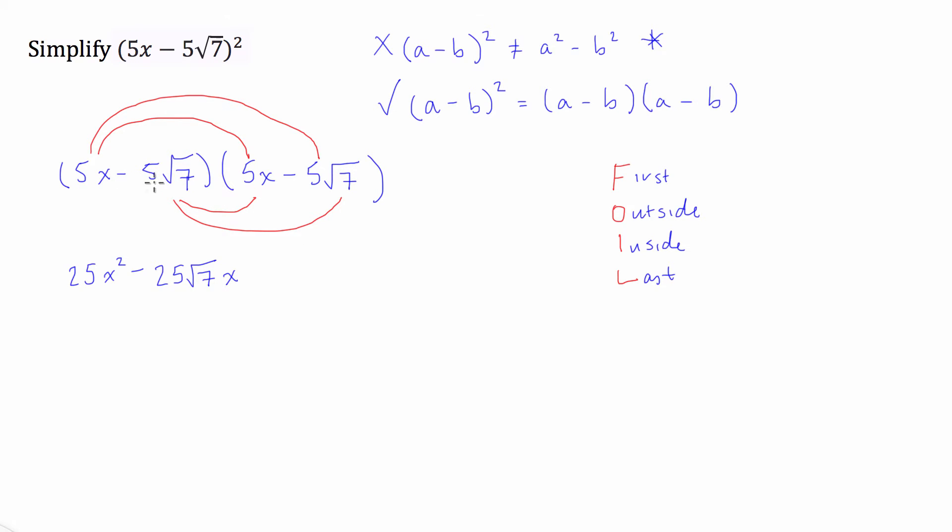Inside, we've got negative 5 root 7 times 5x, so it's going to be another negative 25 square root 7x. And last, we have negative 5 root 7 times negative 5 root 7, so we're going to have a plus. 5 times 5 is 25, and square root 7 times square root 7 is 7.